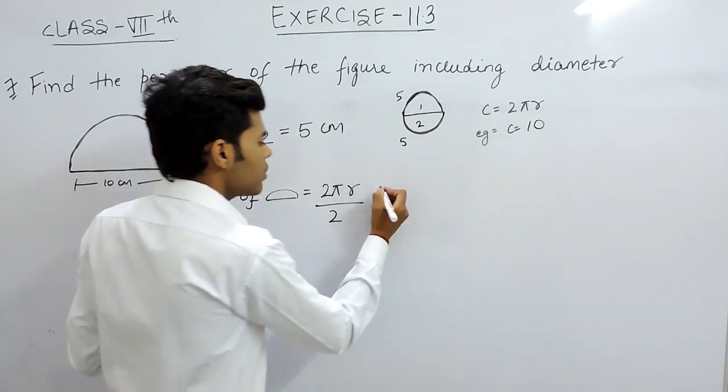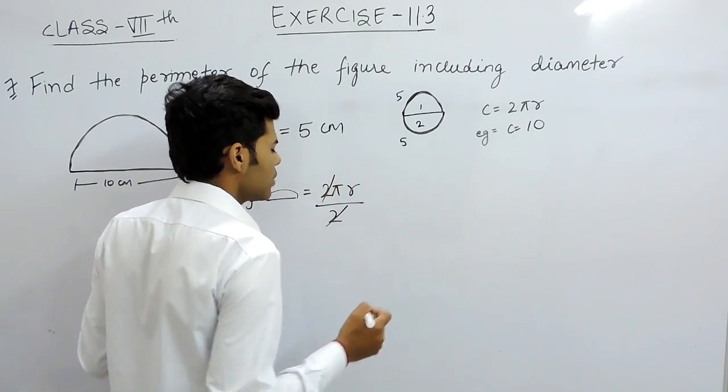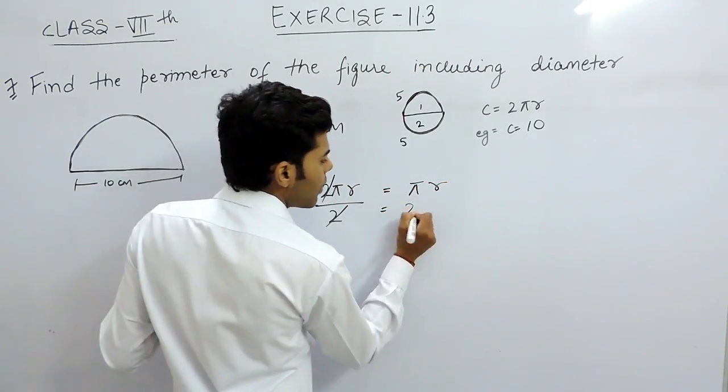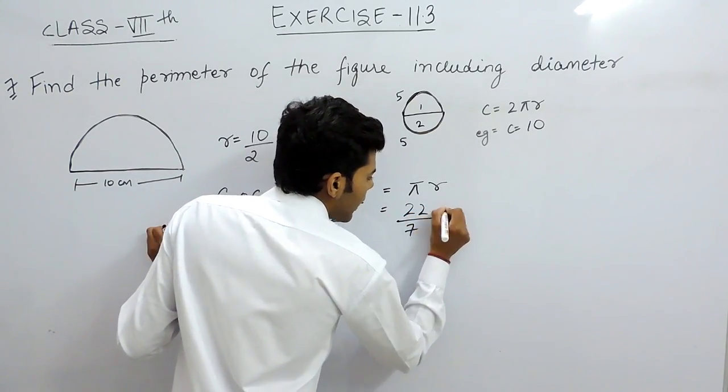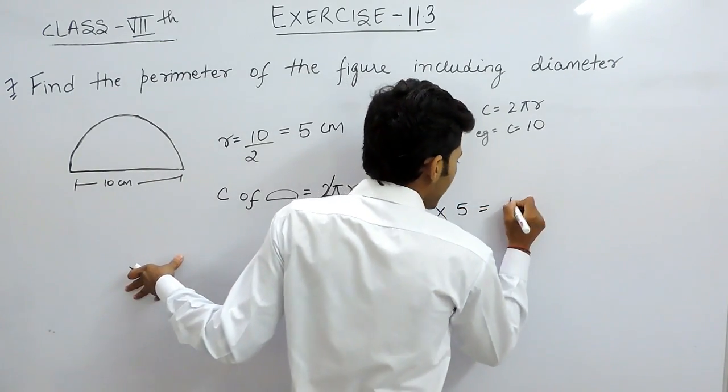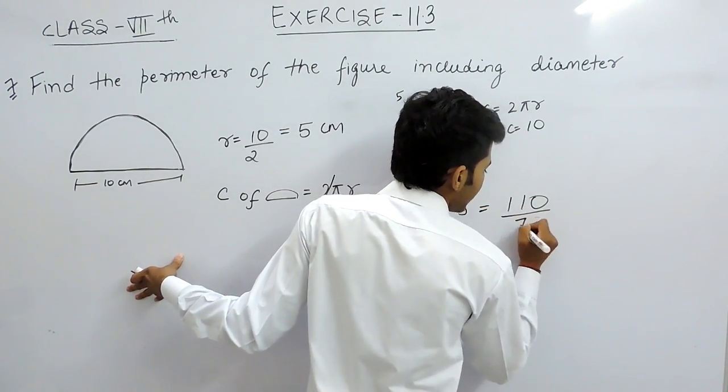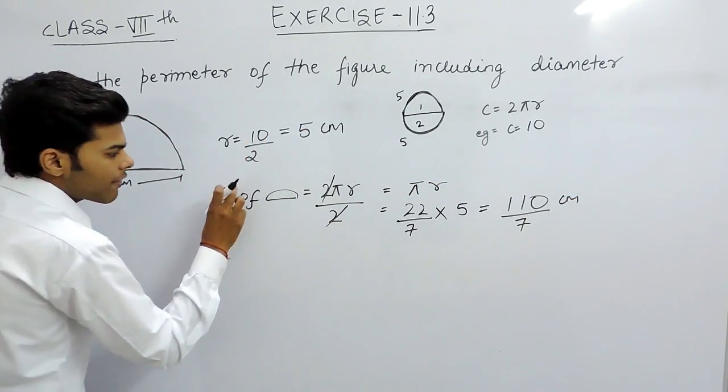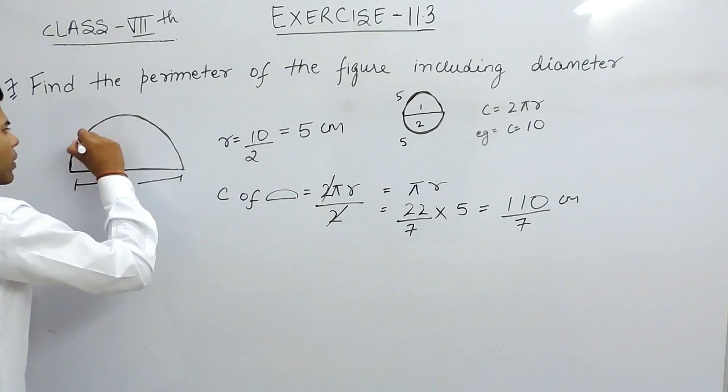That will be equal to, this is cancelled out, so πr, that is 22 by 7 multiplied with r, that is 5. So, 110 by 7. So this circumference that came is only this line.